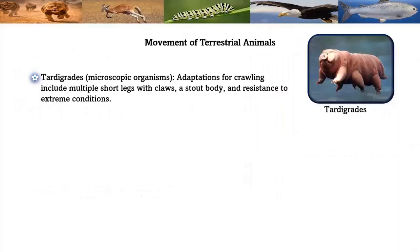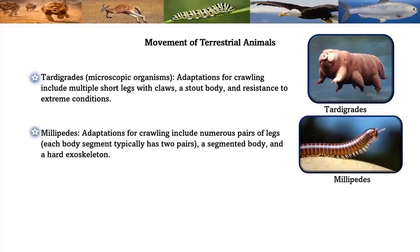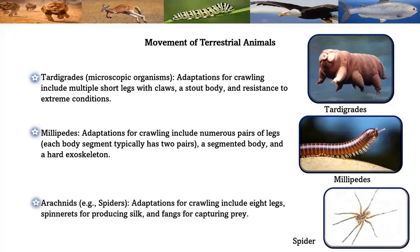Microscopic organisms such as tardigrades have adaptations for crawling including multiple short legs with claws, a stout body, and resistance to extreme conditions. Millipedes' adaptations for crawling include numerous pairs of legs — each body segment typically has two pairs — a segmented body, and a hard exoskeleton. Arachnids' adaptations for crawling include eight legs, spinnerets for producing silk, and fangs for capturing prey.